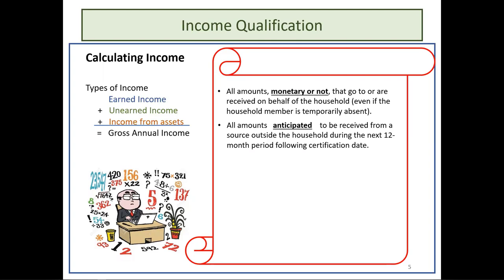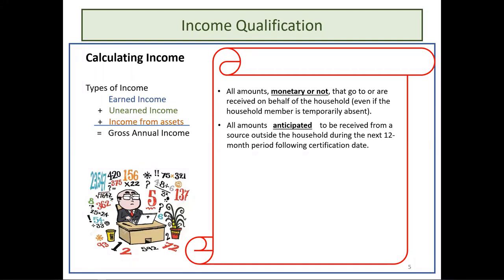If an applicant says they anticipate getting a job next year but have nothing lined up — no start date, no confirmation from an employer — that is not a known income source yet. If they start in a week and have confirmation of that, then it would be a known anticipated amount. We only count income that is anticipated and known to be received in the next 12 months.